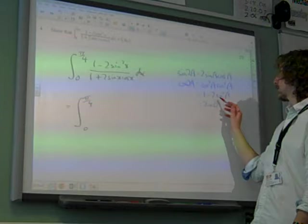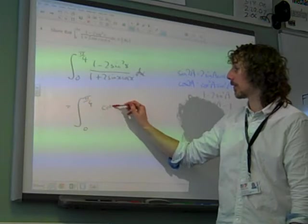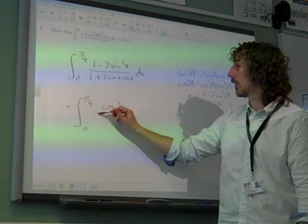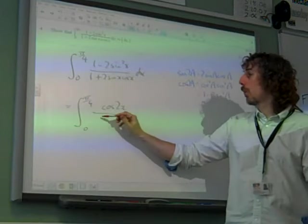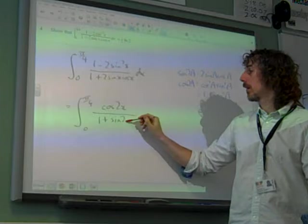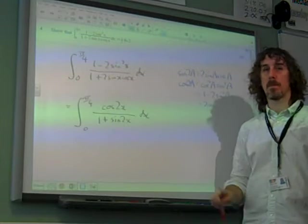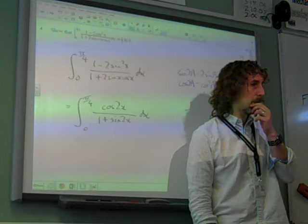So 1 minus 2 sin squared x is cos 2x, and 1 plus 2 sin x cos x is 1 plus sin 2x. That's the crucial thing to get to that point.